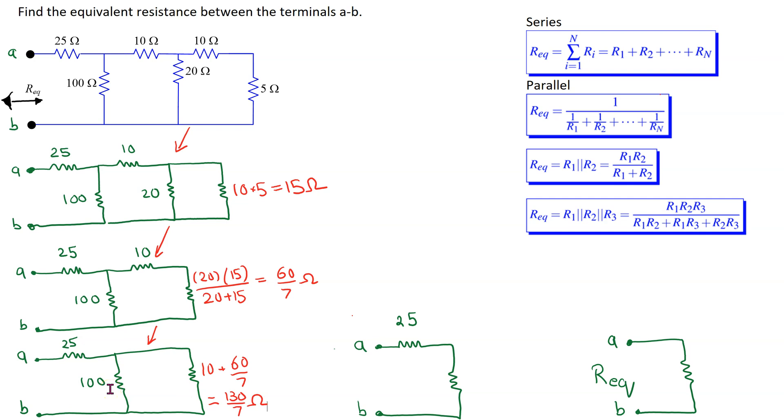Next we keep repeating this process. So now we have two resistors in parallel, and we can replace them by an equivalent resistance, which gives this circuit arrangement. This resistor is given by 100 times 130 over 7 divided by 100 plus 130 over 7, and this gives a value of 15.66 ohms.